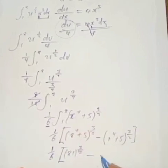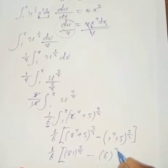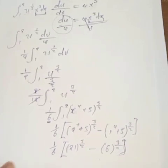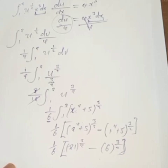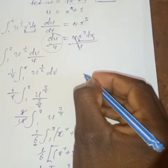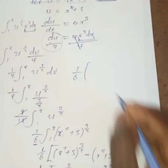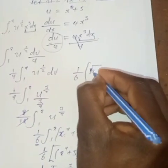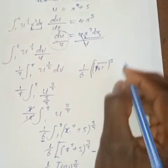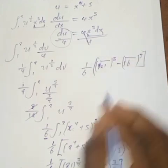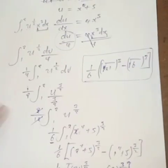We are going to get 1 over 6 times the result. This can be written further as root of 21 cubed minus root of 6 cubed, all over 6. If you can reduce this further, you can continue with it. But I will end here.